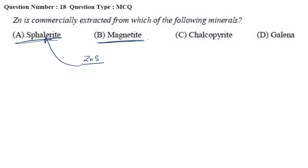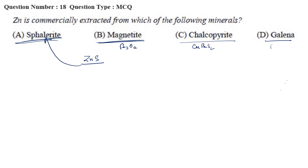Magnetite is Fe3O4. Chalcopyrite is CuFeS2. Galena is PbS — that is the ore of lead. Chalcopyrite is the ore of copper, and magnetite is the ore of iron. So the answer is sphalerite.